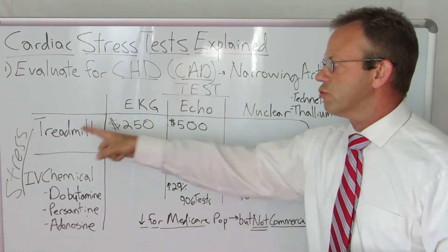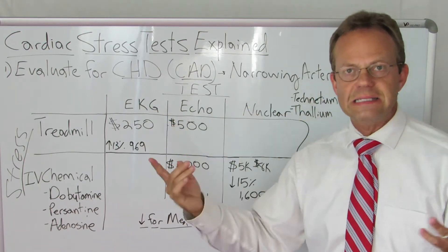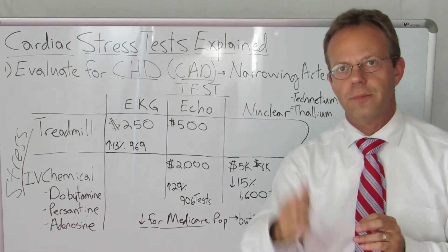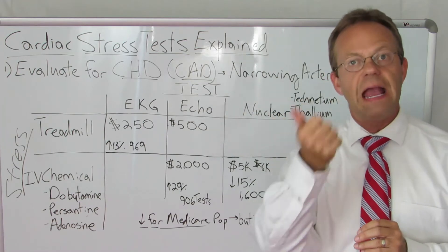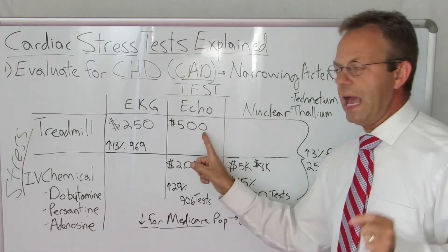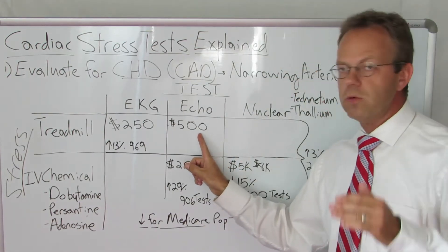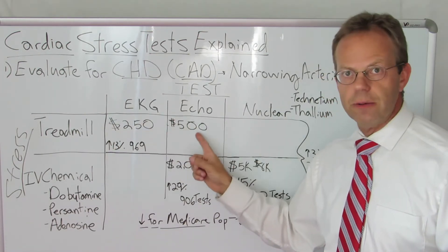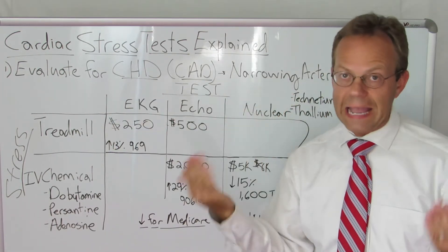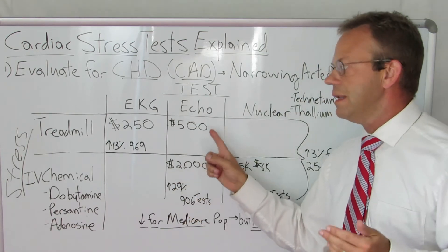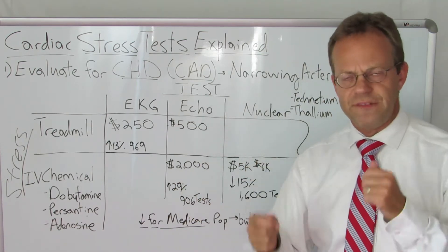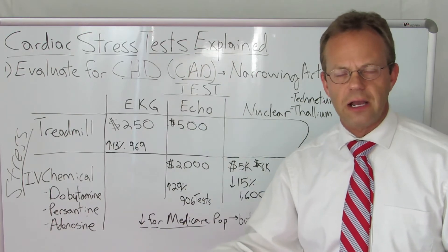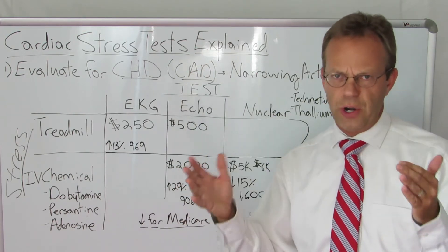The treadmill EKG is the least expensive, at about $250 for the commercial allowed amount covering both the physician fee and the facility fee. Next, the treadmill echocardiogram is more expensive, about $500. Both the treadmill EKG and the treadmill echo can be done in the doctor's office, though it's actually pretty awkward to go really fast on a treadmill and then jump over to the echo table.